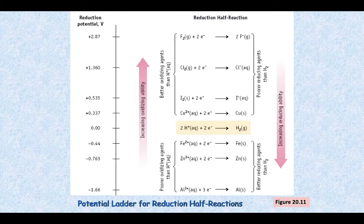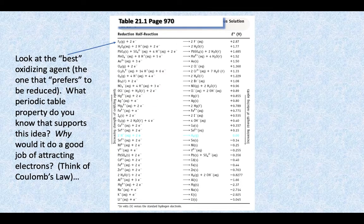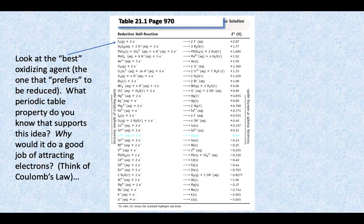Here's another example with a list of reduction potential values and some reactions off to the side, and here's another list as well. This connects to the activity series you may remember from sophomore year that helped determine whether or not a single-replacement reaction is going to occur. We were doing this in a relatively easier way to help you decide which reactions are more likely to happen and which ones aren't.